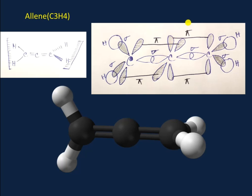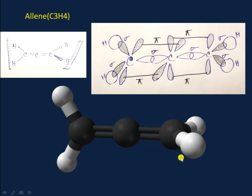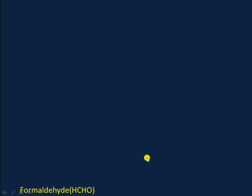The unhybridized pz orbital of C1 and C3 overlaps with the unhybridized py and pz orbitals of C2 carbon to form two pi bonds respectively. The py and pz orbitals of C2 carbon atom are mutually perpendicular to each other, which is why the hydrogens at C1 and hydrogens at C3 remain in different planes of allene. Here is the 3D expression.